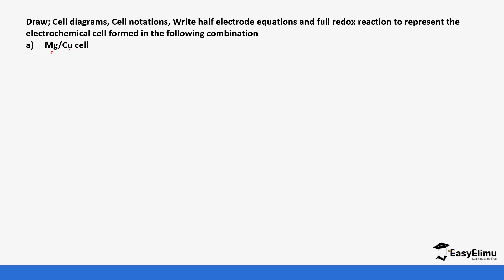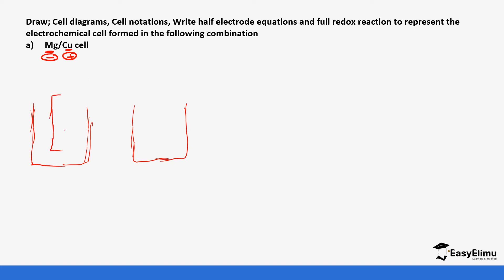The first cell is the magnesium-copper cell. Remember that magnesium is higher in the reactivity series than copper, so magnesium has the highest tendency to lose electrons and copper has the tendency to gain them. This means magnesium will be on the negative electrode (anode) and copper on the positive electrode (cathode). To draw the setup, we use two beakers: the first contains the magnesium electrode dipped in a solution containing magnesium ions, and the second contains the copper electrode dipped in a solution containing copper ions. Ensure the electrode is dipped in the solution.